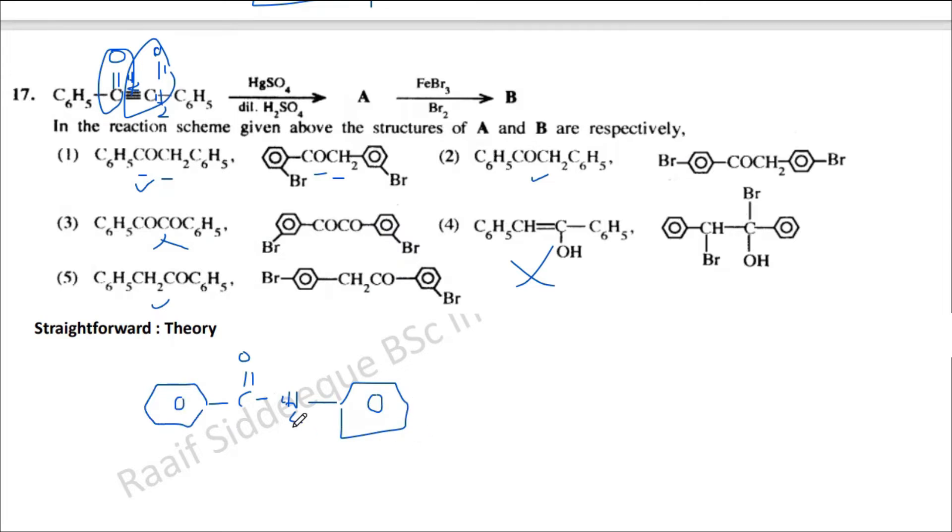One, two, three, four, five, six. Okay. The only thing that you need to identify here, CO is a meta director, CH2 is ortho and para directors.